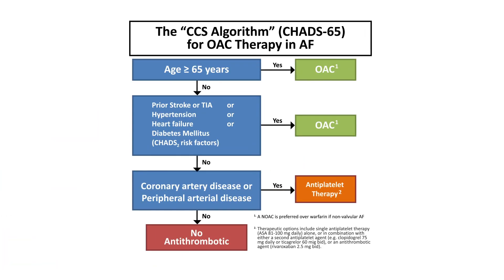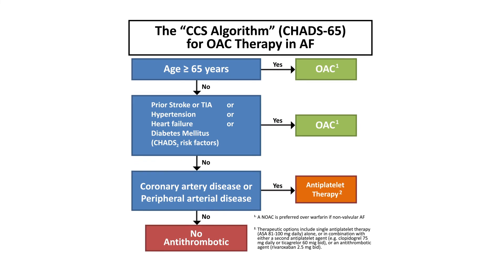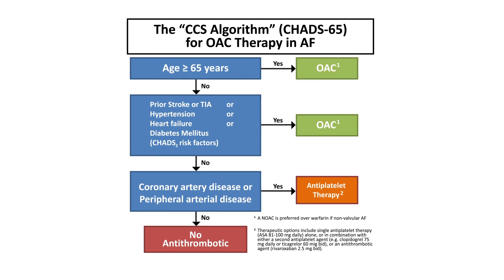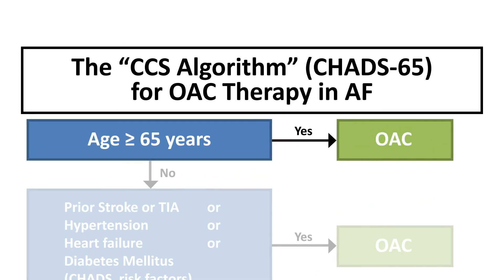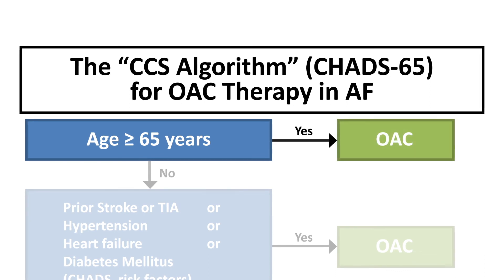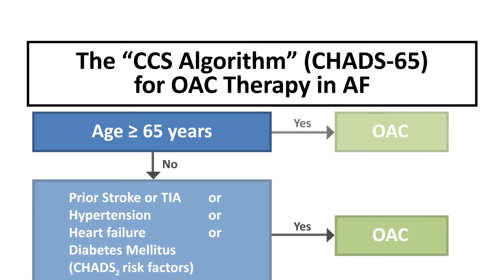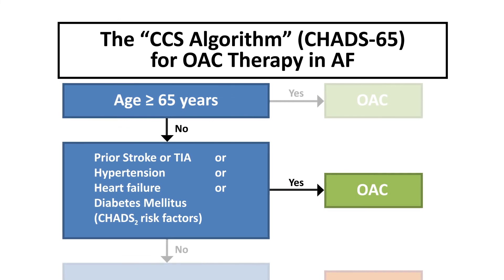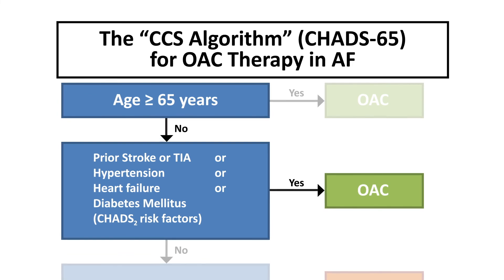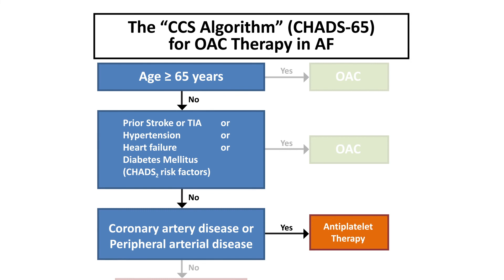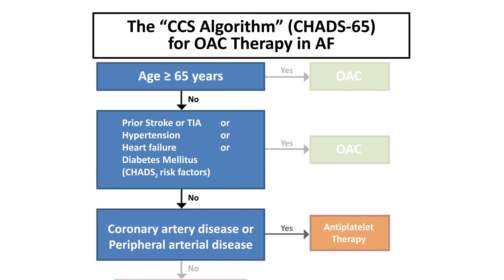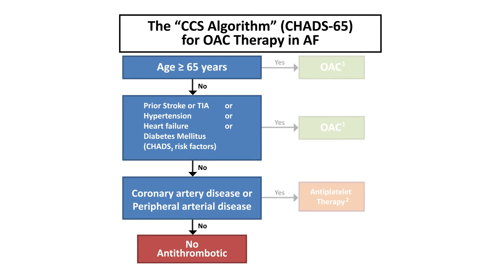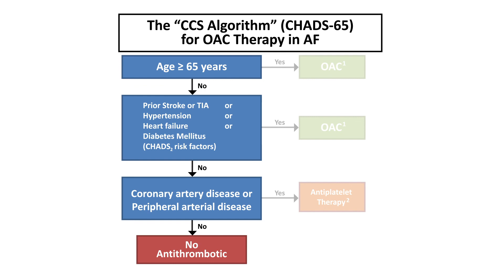Let's recap the steps in the full algorithm. In patients with AF, the decision to use oral anticoagulation therapy for stroke prevention is based on the patient's age and the presence of traditional CHADS-2 risk factors as well as vascular disease. Patients with AF who are 65 and older should receive oral anticoagulation therapy, preferably a NOAC instead of warfarin. Patients younger than 65 should be assessed for traditional CHADS-2 risk factors; the presence of one or more constitutes an indication for OAC therapy. Patients who do not meet age or CHADS-2 criteria but have coronary or peripheral arterial disease can be treated with antiplatelet therapy. Patients who do not meet these criteria and do not have vascular disease are not at sufficiently elevated stroke risk to justify anticoagulant therapy.